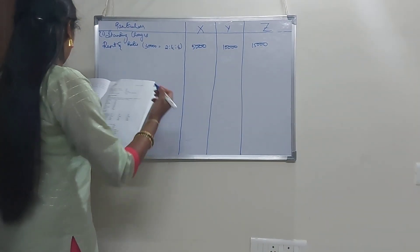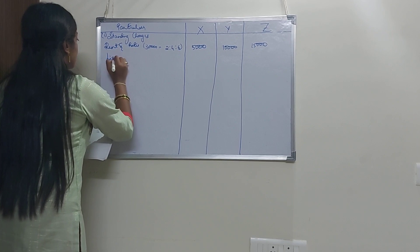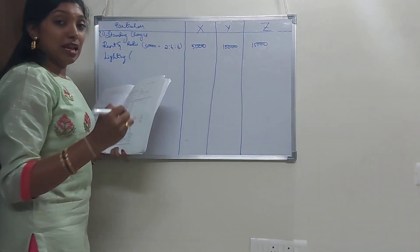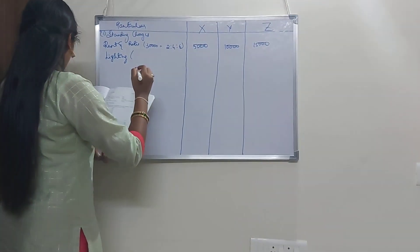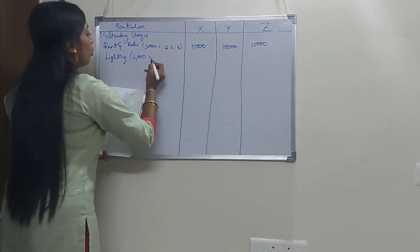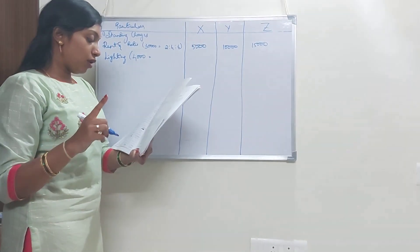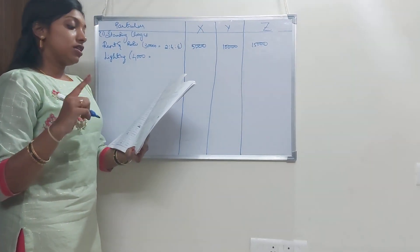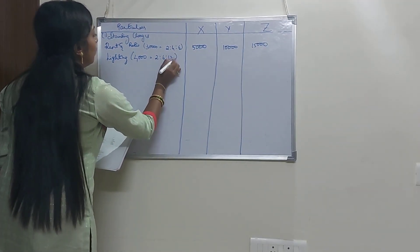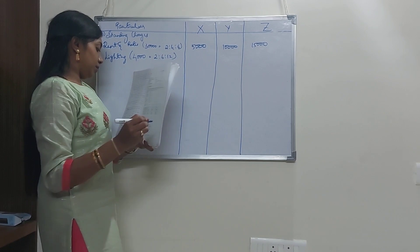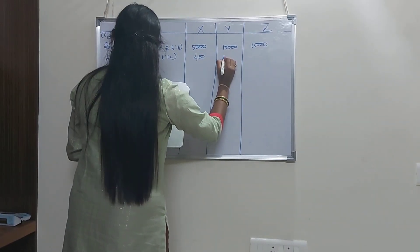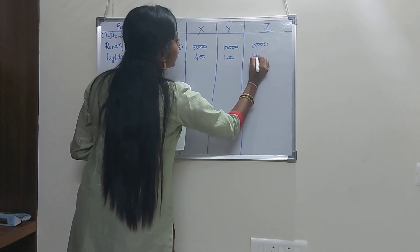Next, lighting. Lighting would be apportioned on the basis of number of light points. The lighting expense is 4,000 and the ratio for number of light points is 20:60:120, which is nothing but 2:6:12. The amount for individual machines would be 400, 1,200 and 2,400.